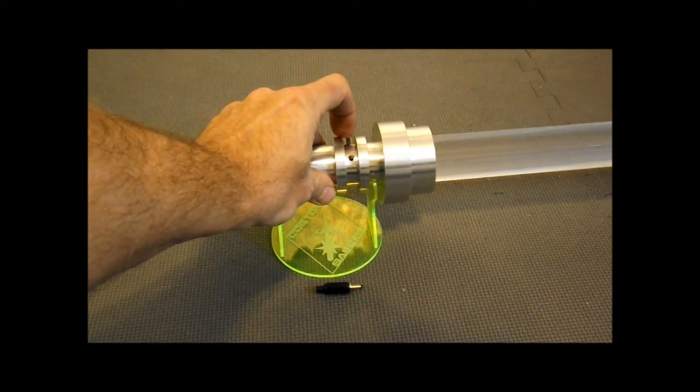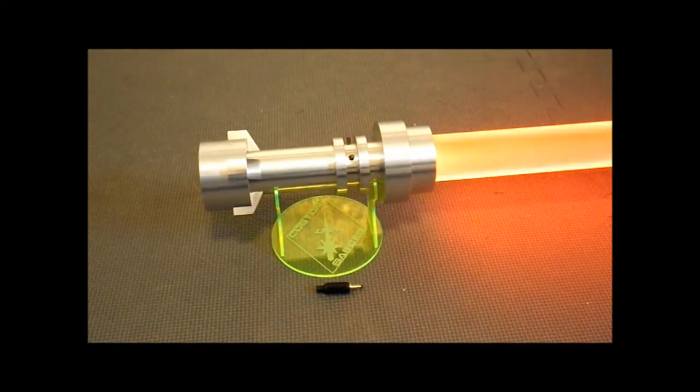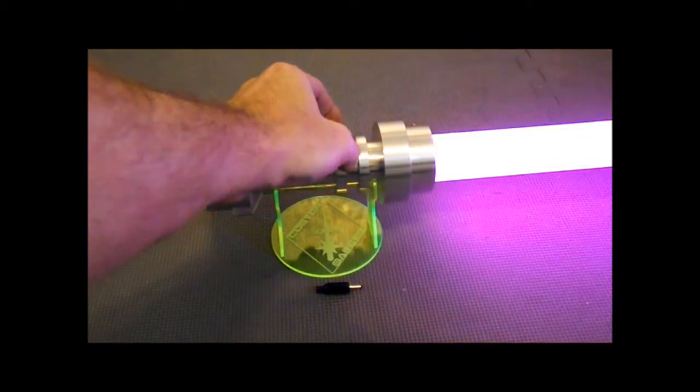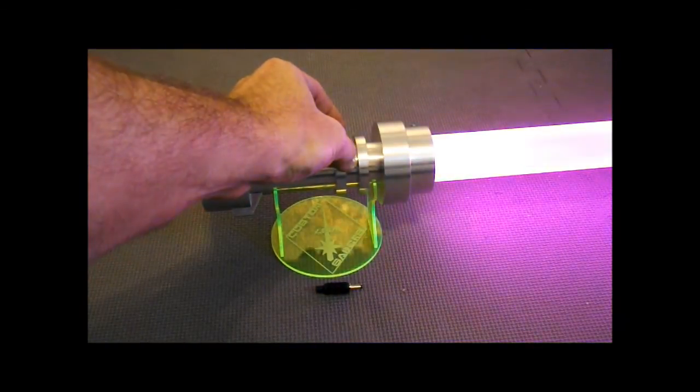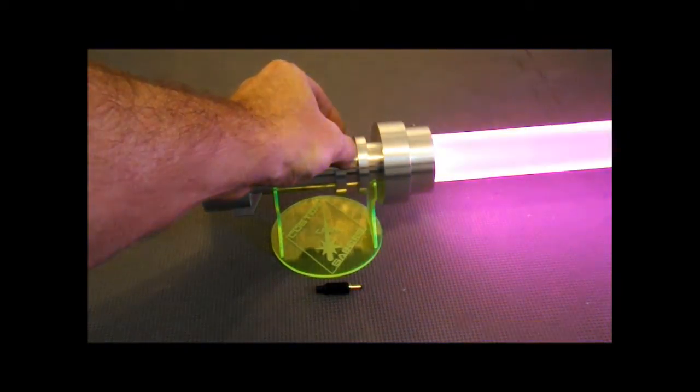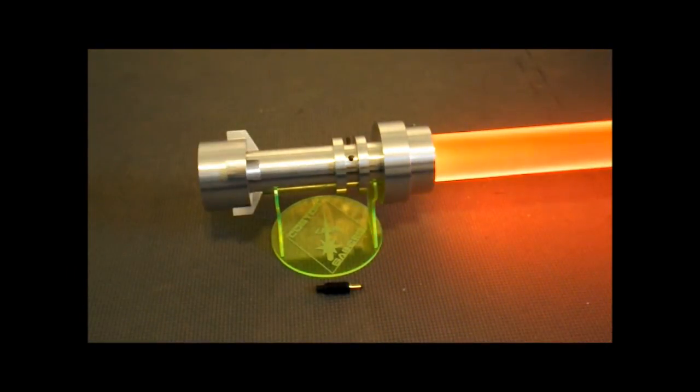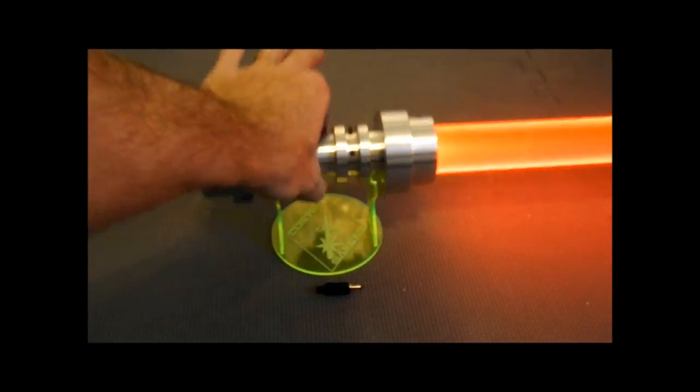Lego PT has a nice red blade and I think the purple flash on clash shows up brilliantly. What he basically has is all the four main colors: green, blue, red, and purple, all on this saber. Two blade colors and two flash on clash colors.